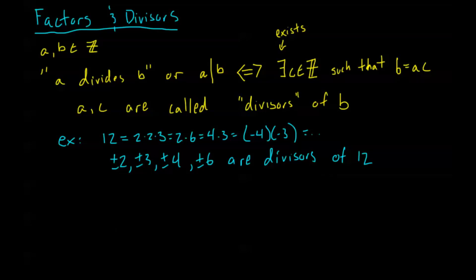Now here's where we make the distinction between divisors and factors. Now divisors are going to be any number that divides the number in question that we're talking about. Factors are the positive divisors. Alright, so these are the divisors that are greater than 0.